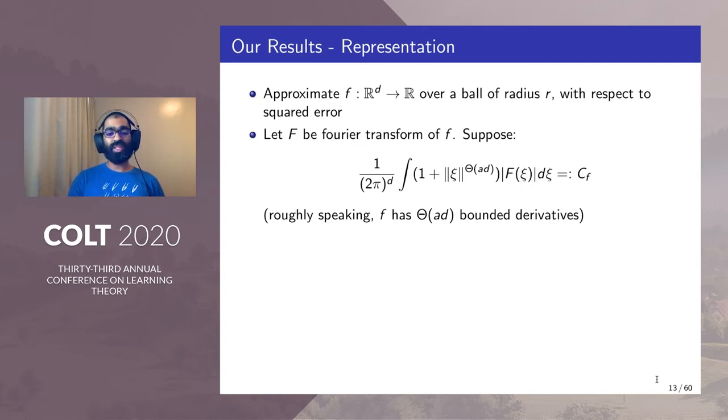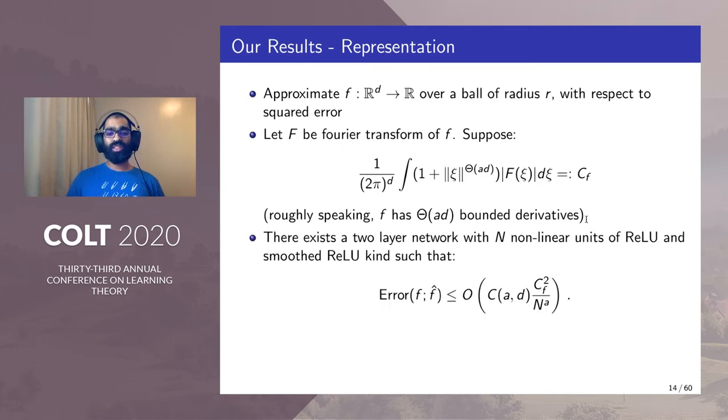We can show that there exists a two-layer neural network with units of ReLU and smooth ReLU kind, which achieves the rate of 1/n^a.